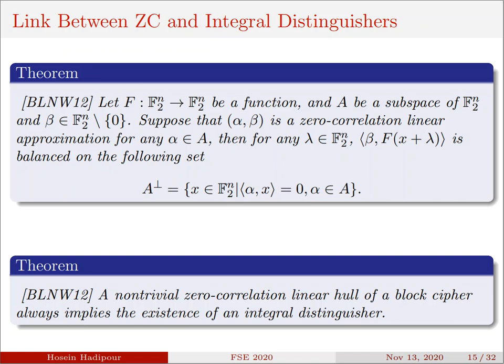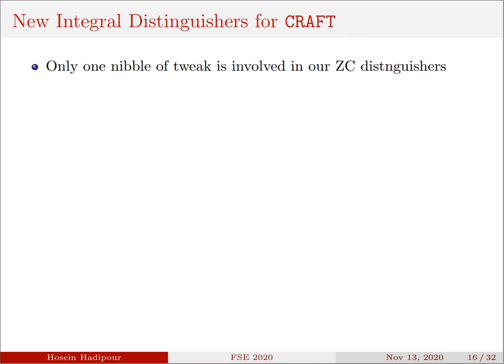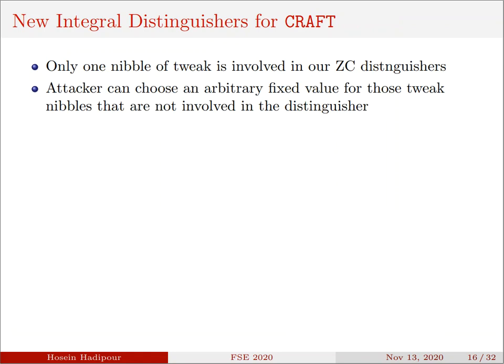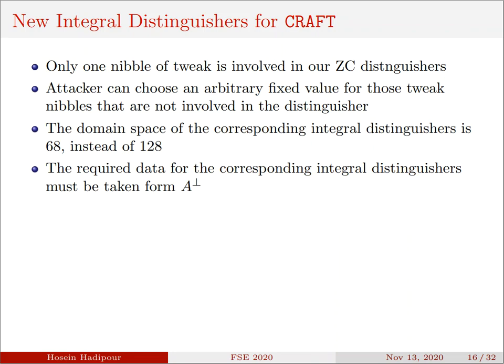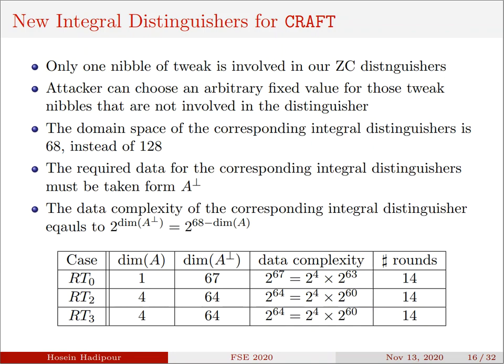For example, let F be a function from F₂ⁿ to F₂ⁿ, and A be a subspace, and β is a non-zero vector such that α⊤·β is a zero-correlation linear approximation for any α in A. Then, for any λ in F₂ⁿ, this linear combination of the output bits is balanced over the orthogonal complement of A. The next theorem shows that the set of input masks should not necessarily form a subspace, and a non-trivial zero-correlation linear hull can always be converted to an integral distinguisher.